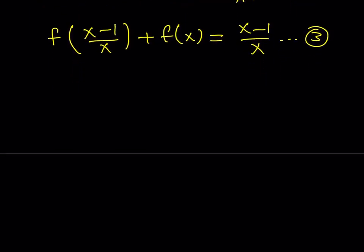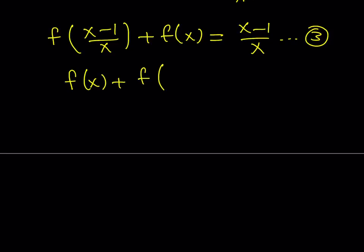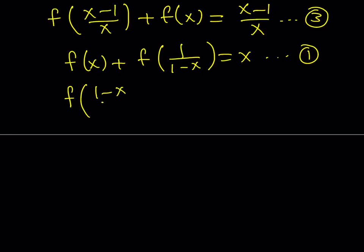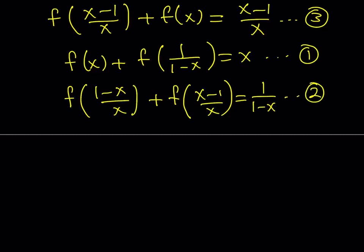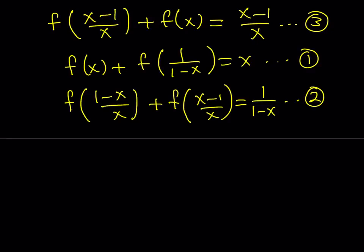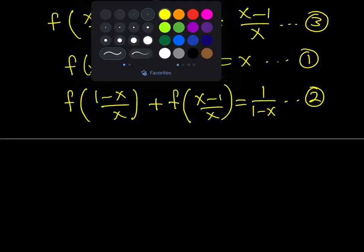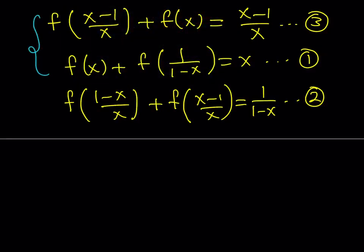Now let's put it all together and solve the system. Equation 1 is f(x) + f(1/(1-x)) = x. Equation 2 is f(1/(1-x)) + f((x-1)/x) = 1/(1-x). Notice that in equation 2 we have both of the unwanted terms. In equations 1 and 3 we have f(x) along with the other terms. So it makes sense to add equations 1 and 3, then subtract equation 2.